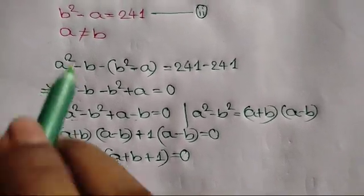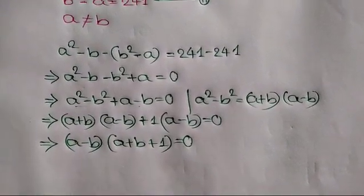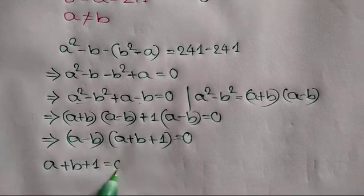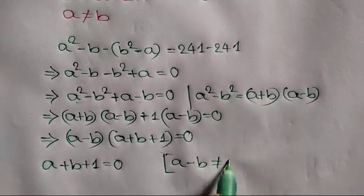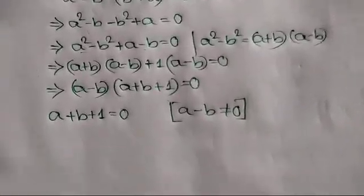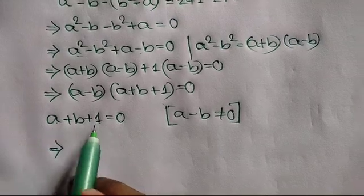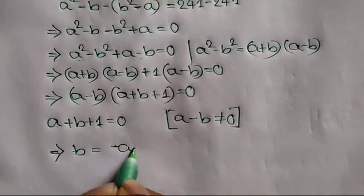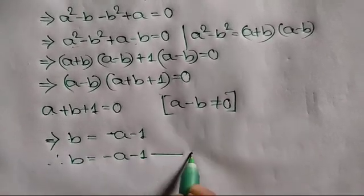Now, attention here: A is not equal to B, so A minus B is not equal to 0. Therefore we will have A plus B plus 1 is equal to 0. Taking A and 1 to the right side, we get B is equal to negative A minus 1. This is equation number 3.